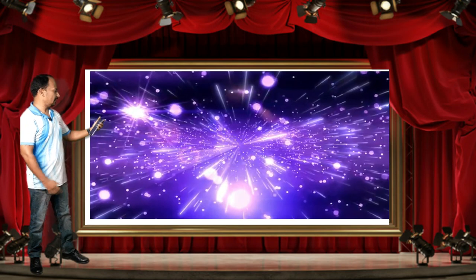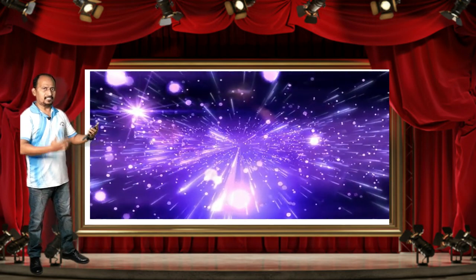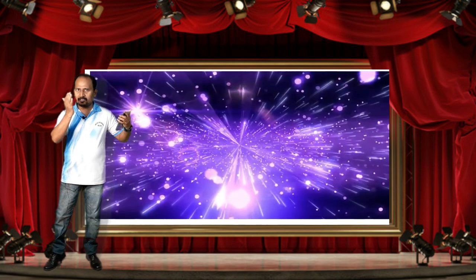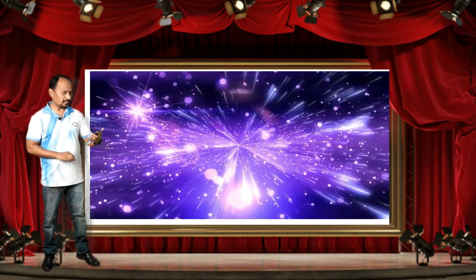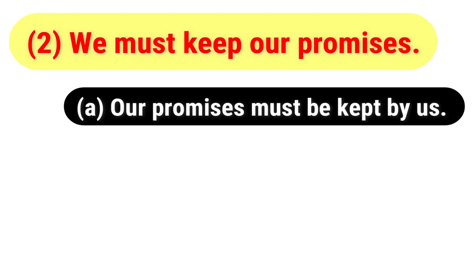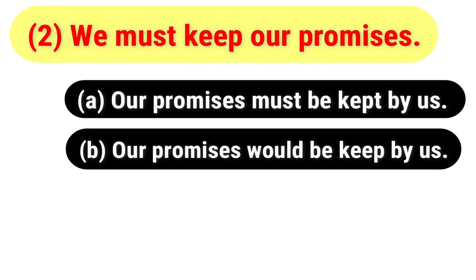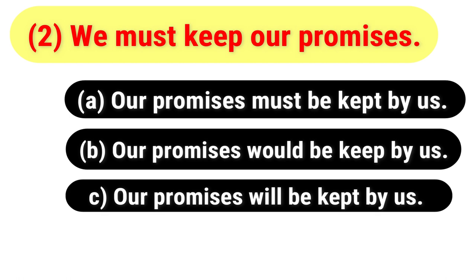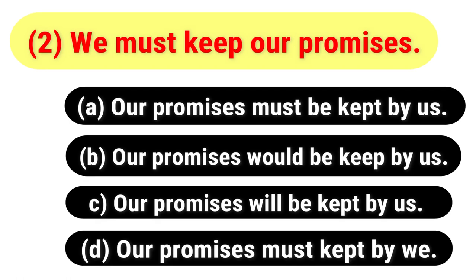The next question is in active voice: 'We must keep our promises.' You have to choose the correct passive voice answer. The options are: A) Our promises must be kept by us; B) Our promises would be kept by us; C) Our promises will be kept by us; D) Our promises must kept by us. Your time begins now.